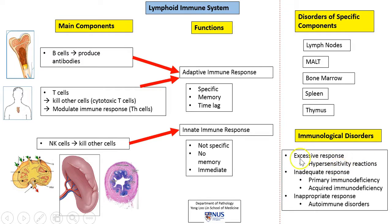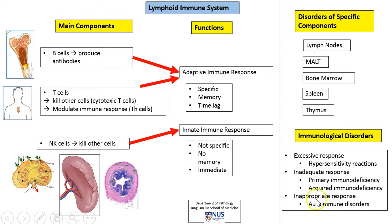So what can go wrong with immune function? First, there can be an excessive immune response, seen in examples such as allergies and hypersensitivity reactions. There can be an inadequate response, which can be either primary — for example, SCID, severe combined immunodeficiency — or acquired immunodeficiency, which can be due to drugs such as steroids, chemotherapy, or viral agents such as human immunodeficiency virus. And sometimes there can be an inappropriate immune response, seen in a spectrum of autoimmune disorders such as SLE or rheumatoid arthritis.